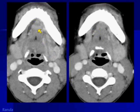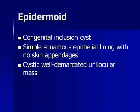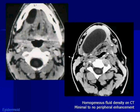Ranula can sometimes be confused with a congenital entity called the epidermoid. An epidermoid is a congenital inclusion cyst lined by simple squamous epithelium. It too is cystic, shouldn't enhance, is unilocular, and is well demarcated. Here's a nice example — sometimes you just can't tell the difference between the two.